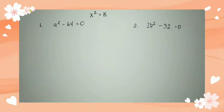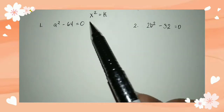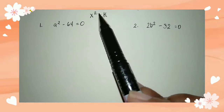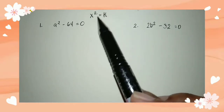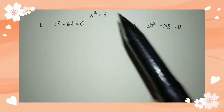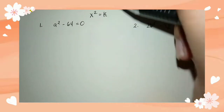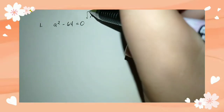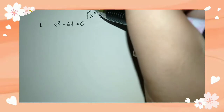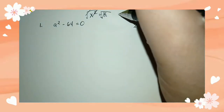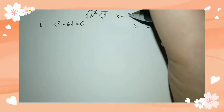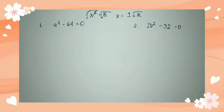Moving on to the discussion itself: solving quadratic equations by extracting square root. We have x squared is equal to k, where k is a constant. We square it out like this, then cancel, so x is equal to positive and negative square root of k.